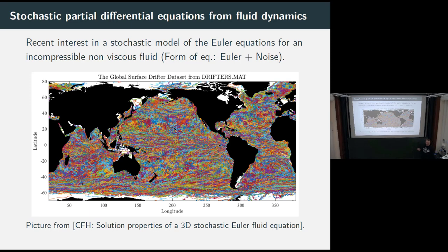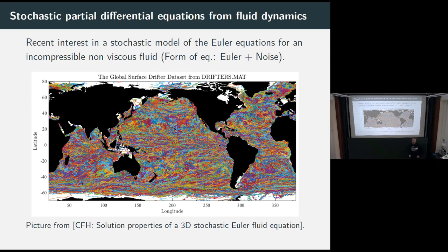Here's a picture from their paper — that's not my picture — which is on solution properties of a 3D stochastic Euler fluid equation. Basically in their paper and also some papers which came before, they are arguing that it's interesting to look at the stochastic version of Euler's equation for various reasons. They have a stochastic forcing term and in their equation they have something like transport noise, whereas we have different noise. I will comment on the type of noise later on.